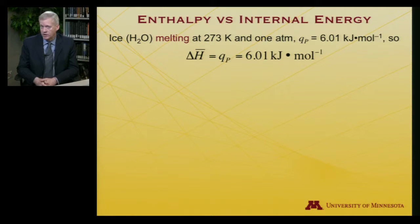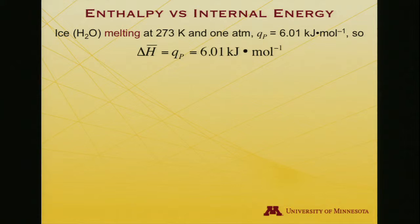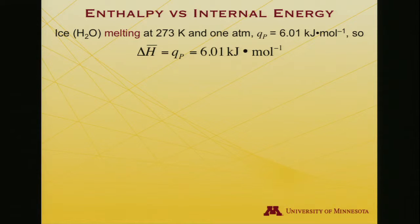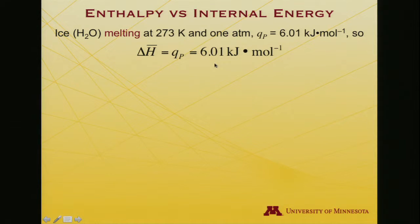Let's work with some numbers here. Let's take ice — solid water. It melts at 273 Kelvin at one atmosphere of pressure. If you did the measurement, the heat required to melt that ice — the heat of fusion — is 6.01 kilojoules per mole. So molar delta H is equal to the heat transfer at constant pressure: 6.01 kilojoules per mole. That's the heat of fusion.